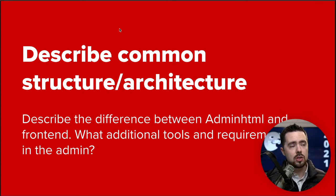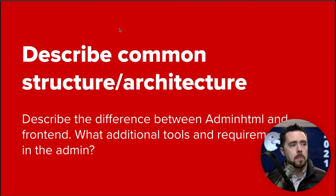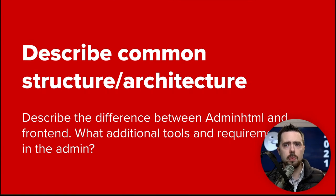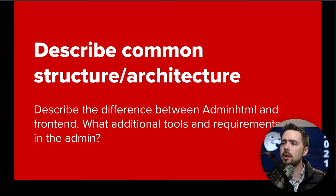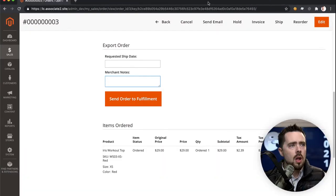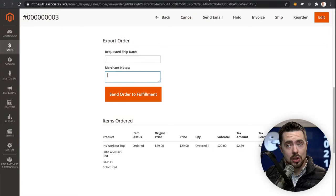Let's dive into our first subject: describe common structure and architecture. Specifically, describe the difference between admin HTML and frontend — what additional tools and requirements exist in the admin? As we look at the Magento admin, one of the first things I see is a code at the end of each URL. This is called the secret key. Every link in the Magento admin has one of these secret keys associated with it, and it changes for every single one.